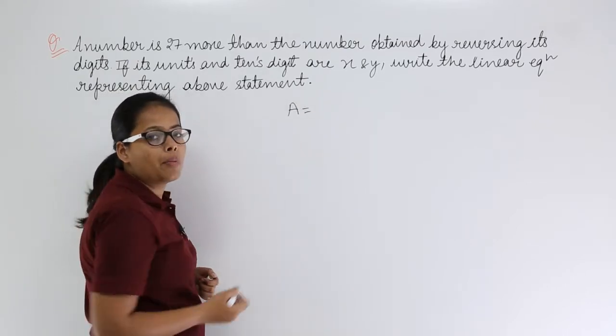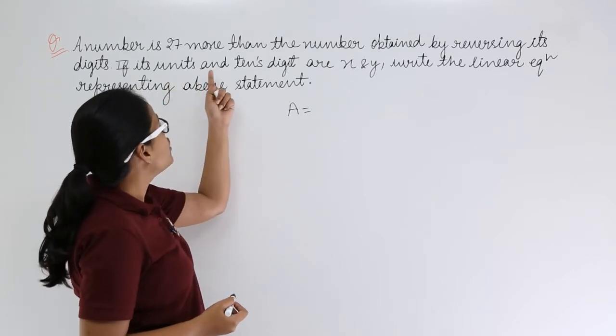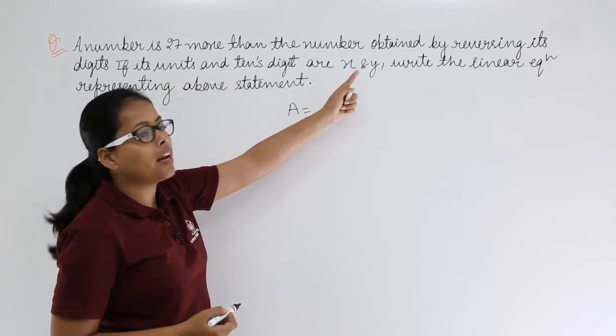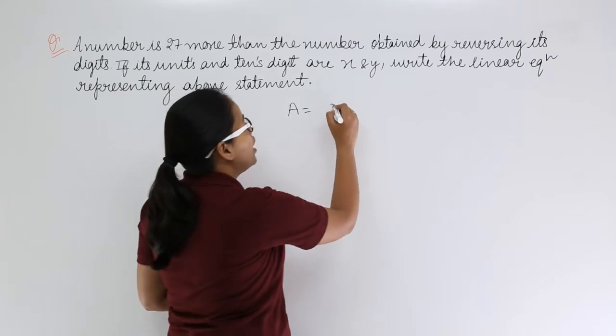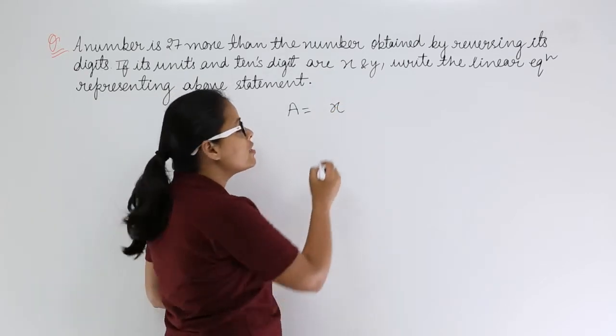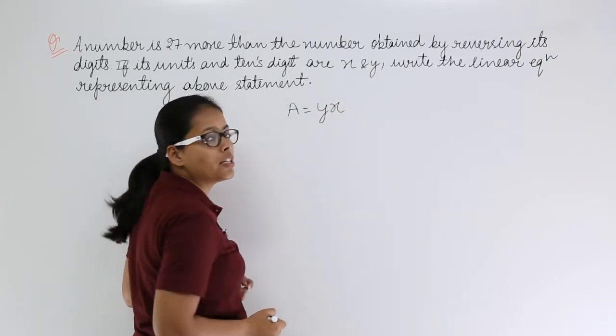Where this number is, what is this number? At its units and tens digit there are x and y. At its unit digit there is x, at its tens digit there is y.